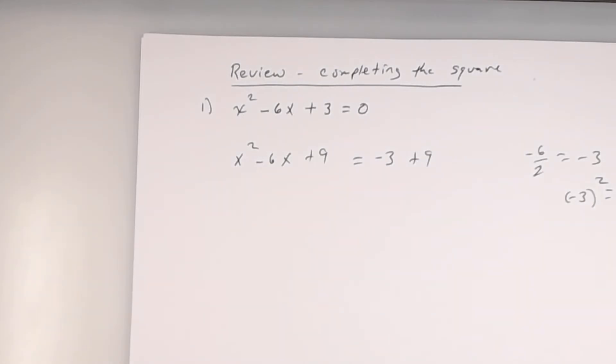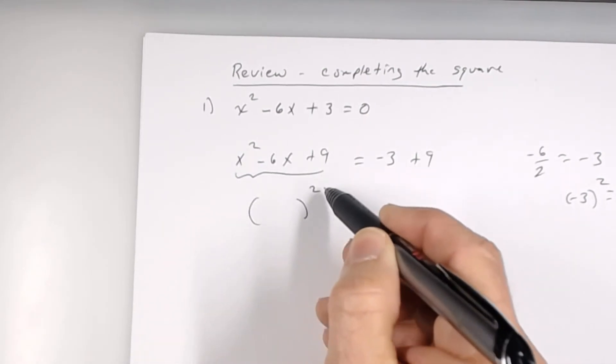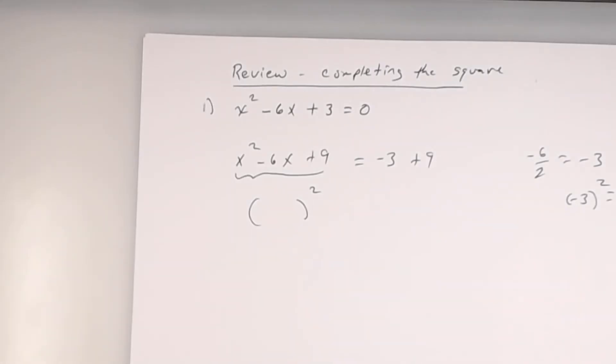So you add to both sides. So plus 9, plus 9. If you're doing this correctly, if you're doing this correctly, the trinomial here should now be a perfect square trinomial. Which means I can write as a binomial squared. And you can.